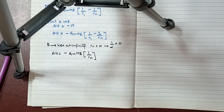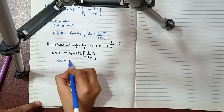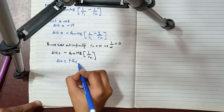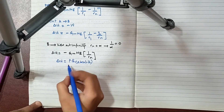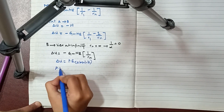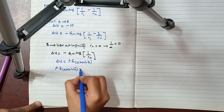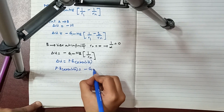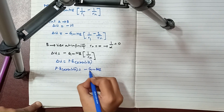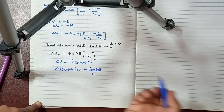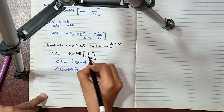This is the absolute potential energy. So delta U equals the absolute potential energy, which equals minus GMₑm / r₁. Here it is r₁, not rₙ. That gives us the absolute potential energy formula.